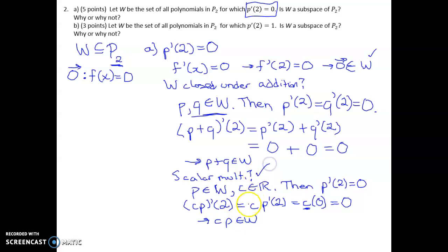so this product is going to be 0, which means that C times P does belong in W, which means that, yes, it's closed under scalar multiplication. And so in part A, W is a subspace of P2.